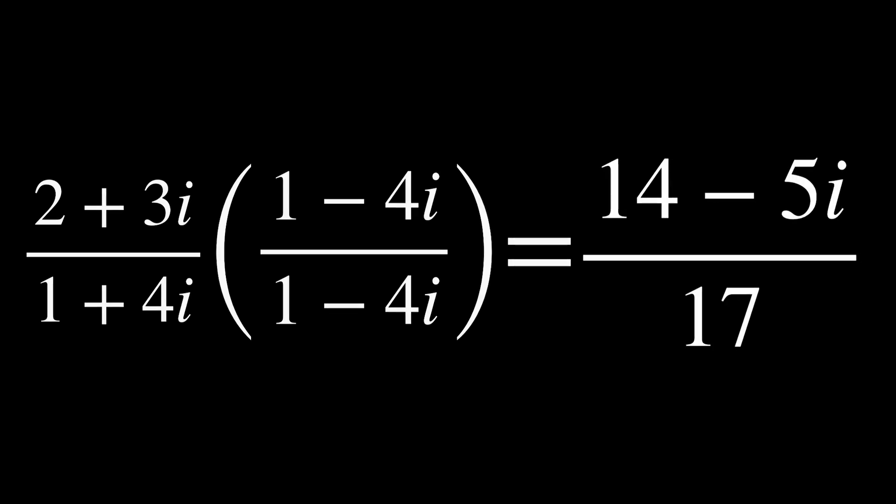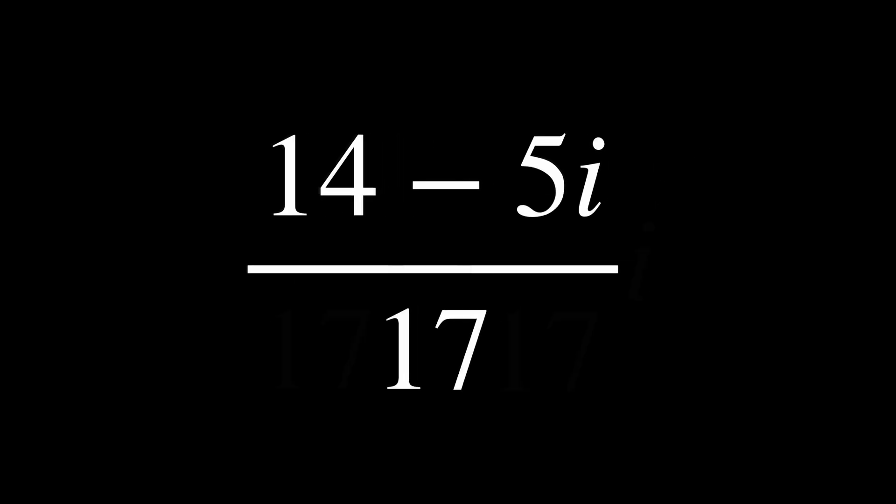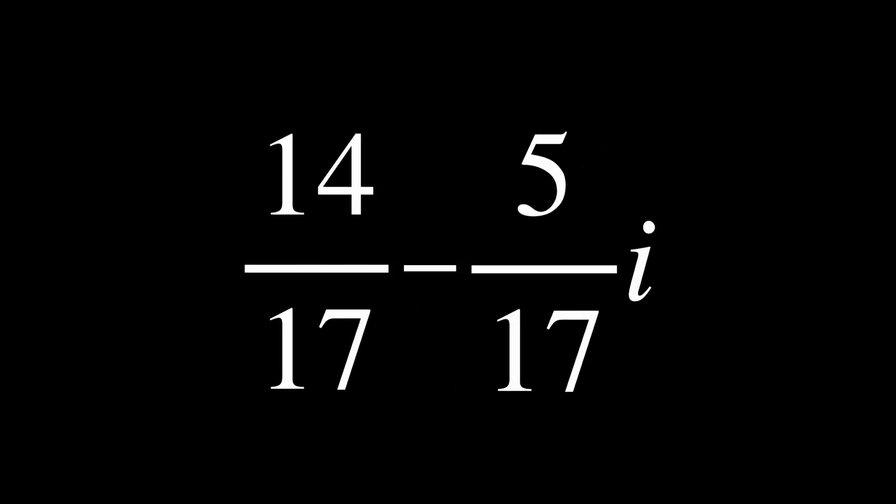Let's try this on 2 plus 3i divided by 1 plus 4i. First, we will multiply the top and the bottom by the conjugate, which is 1 minus 4i. The top is equal to 14 minus 5i, and the denominator simplifies to 17. So our final answer is 14 seventeenths minus 5 seventeenths i.